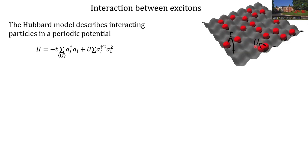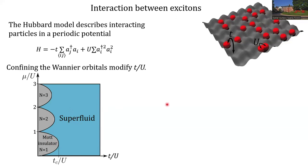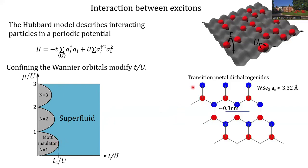This model is particularly important because it describes many of the effects in condensed matter physics that come from interactions between particles. In particular, it is also of high interest for the superfluid to Mott insulator transition. One material that has been demonstrated to confine the Wannier orbitals and hence reach the regime in which this transition can be observed is transition metal dichalcogenides.